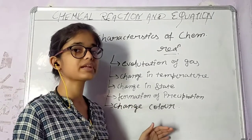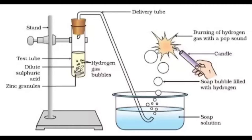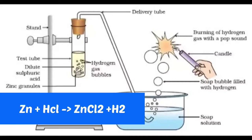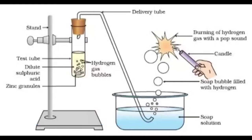Let's understand some examples of chemical reactions. The first characteristic is evolution of gas. When the product is made from reactants, there is evolution of gas. For example, when we add zinc granules, which is a metal, to dilute sulfuric acid, hydrogen gas evolves. To detect this gas, we transfer it into a soap solution which forms bubbles. When we bring a candle or burner near it, the bubbles burst with a pop-like sound, confirming it is hydrogen gas.